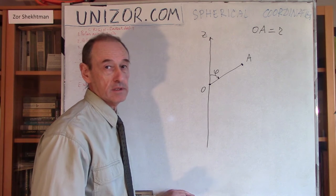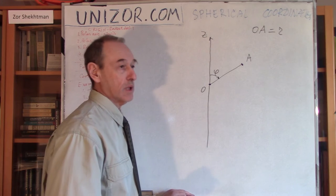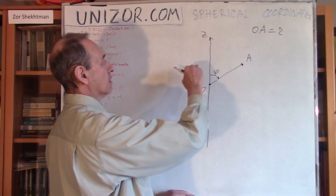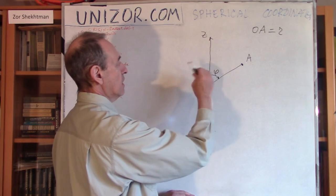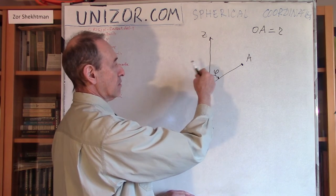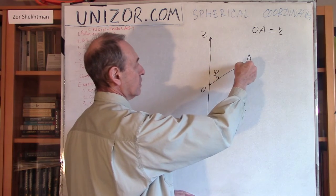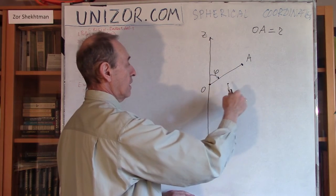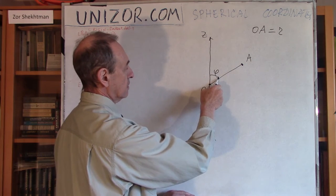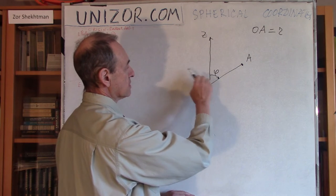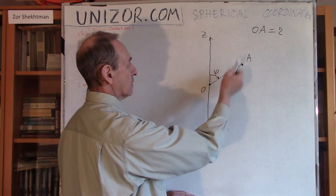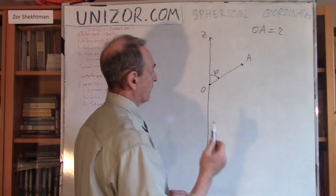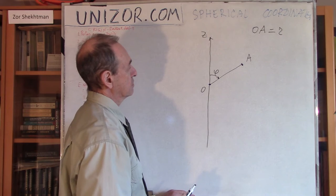Does this define our point? Obviously not exactly, because any point which has the same angle with the Z axis would qualify — it's like a cone. So if R is fixed you have a sphere, and if the polar angle phi is fixed you have a cone. The intersection between a cone and a sphere is a circle, so it's still not an exact determination of the position of the point. We need three coordinates in three-dimensional space, and we have defined only two of them.